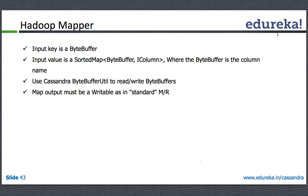The input value is basically a sorted map of byte buffer and iColumn. iColumn is an interface defined in the Cassandra API that represents a column. So the byte buffer is basically the name of the column that you want to query, and iColumn is the interface that you want to interact with.